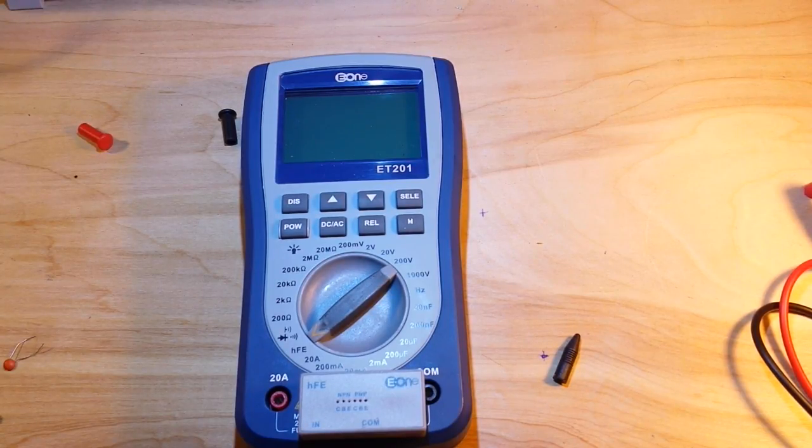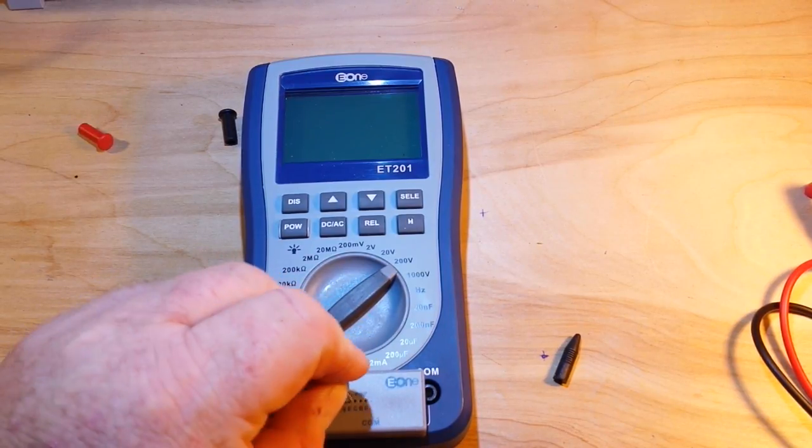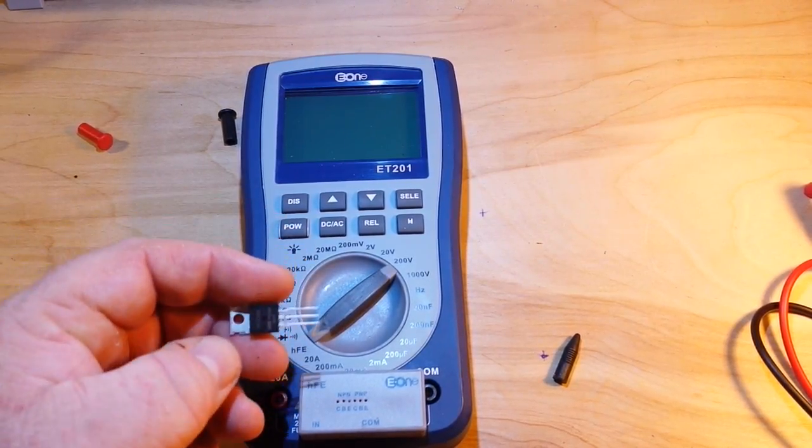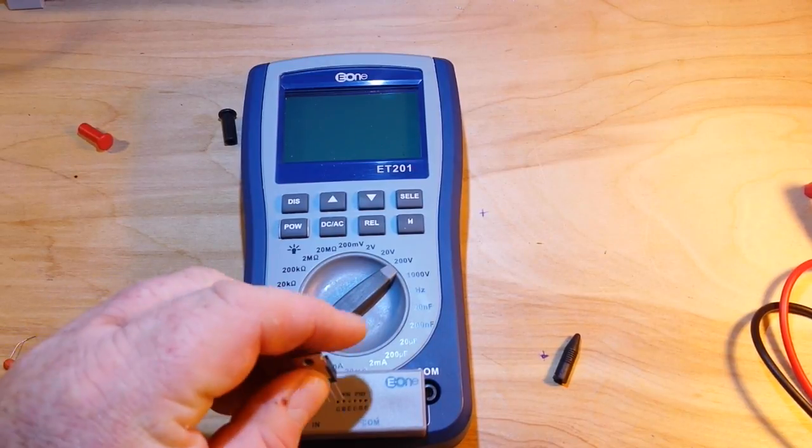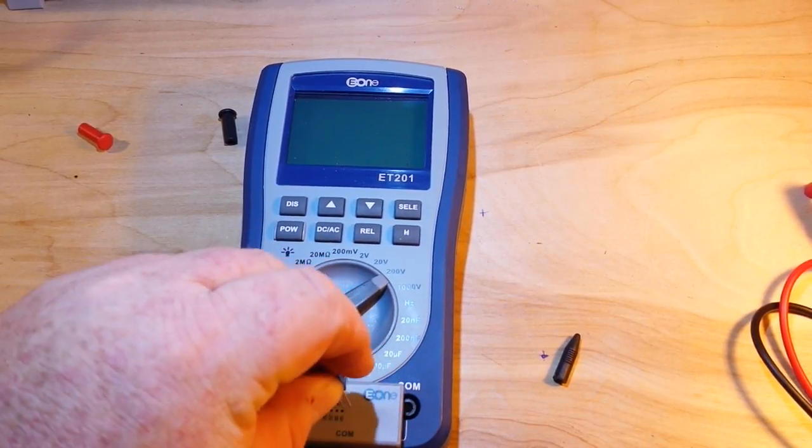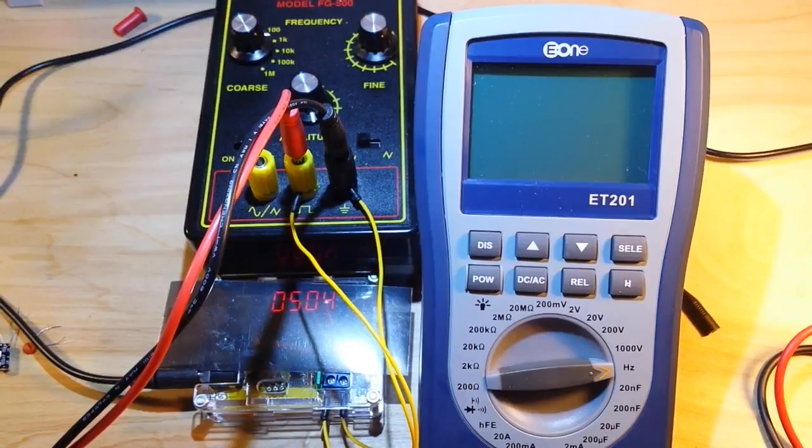Let's take a look. I was going to check a MOSFET. This is an NPN MOSFET, but the pins do not fit in these tiny little holes, so we can't check a MOSFET out. Sorry.